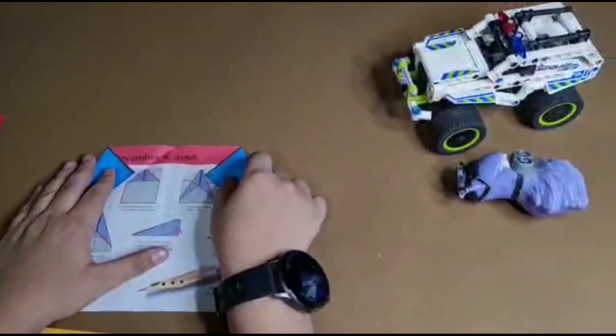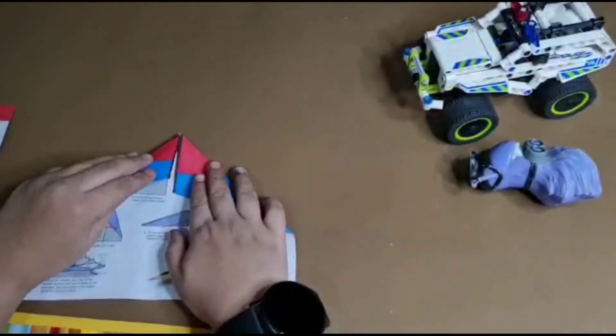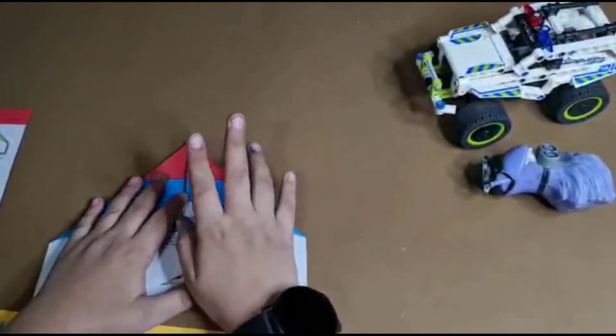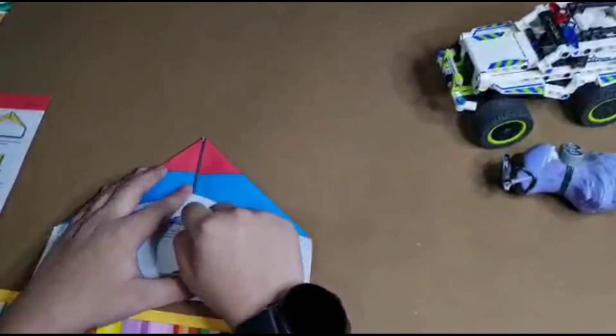Now swing the flaps over from step 1, and then fold the point down to the crease.